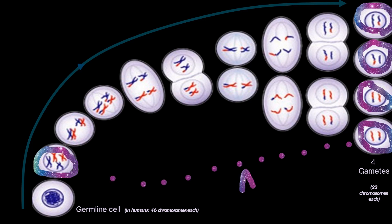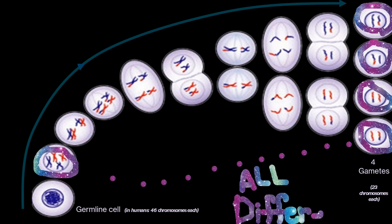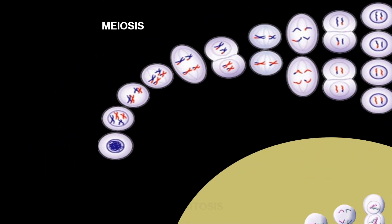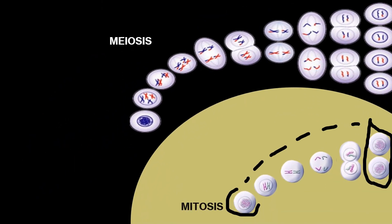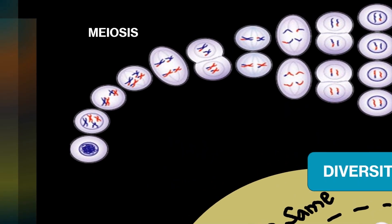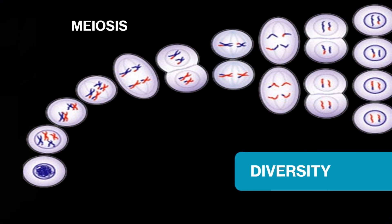This is in stark contrast to the usual cell division — mitosis, or binary fission — where cells divide to produce identical copies of each other. Meiosis is all about diversity.